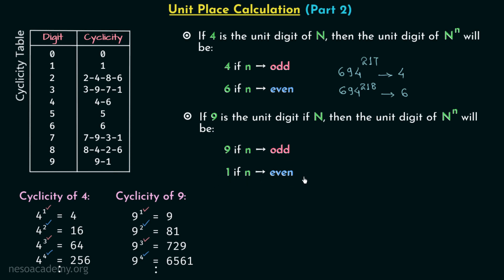The unit digit will be one if n is even. Let's see one example: 199 raised to power 90. We are required to find out the digit at unit place. Number 199 has 9 at its unit place, so we can use this rule. We need to focus on the power — 90 is even — and we know when we have even power the digit at unit place will be equal to 1.